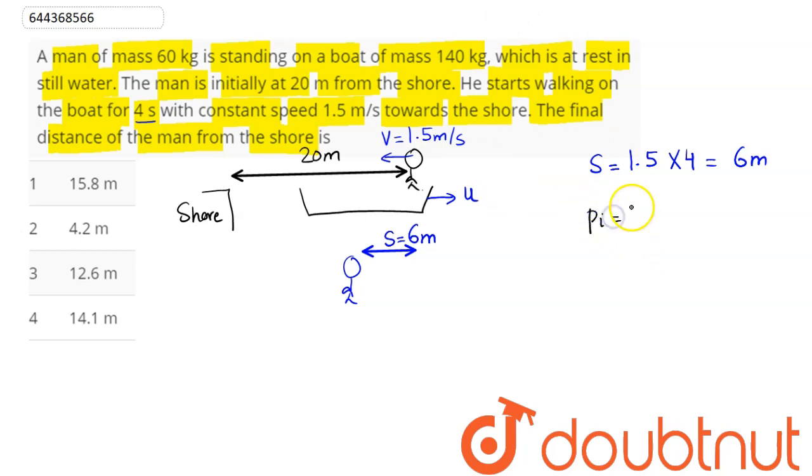Hence the initial momentum of this system will be equal to: we have here 60 kg mass moving with speed of 1.5 is equal to...